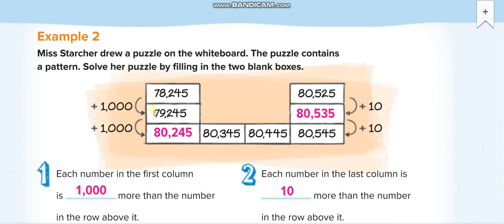These two blank boxes, how you fill them? You see from this one to this one: this is 78,245, this is 79,245. So you came to know that he added 1,000. Then he will add one more thousand, so 79,245 becomes 80,245.